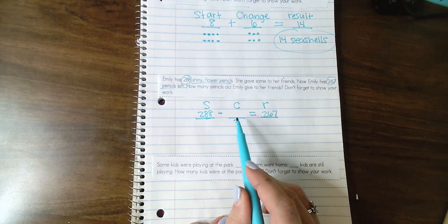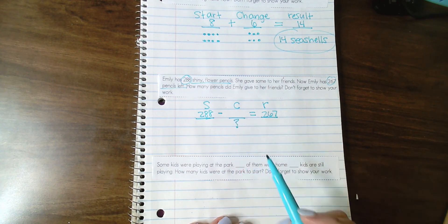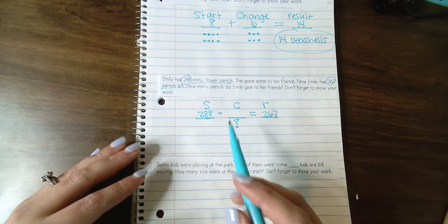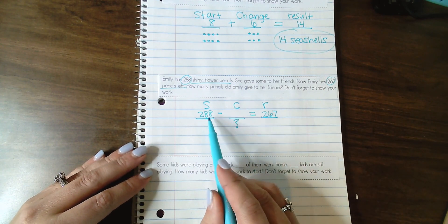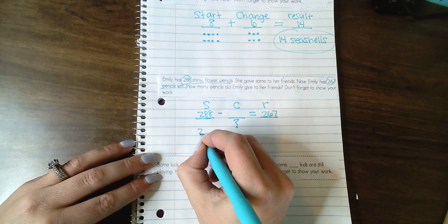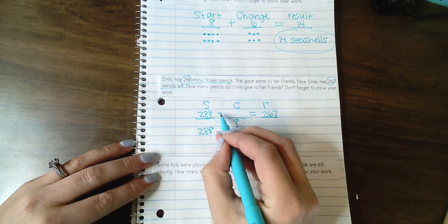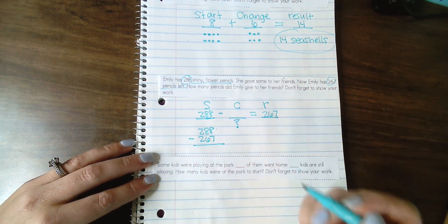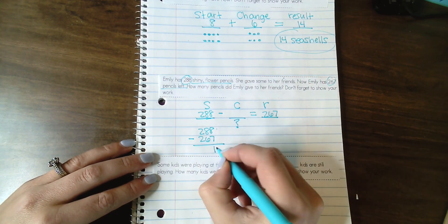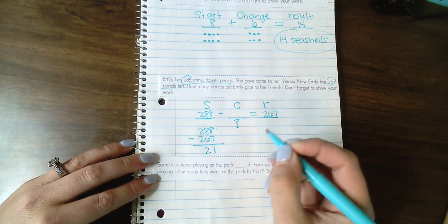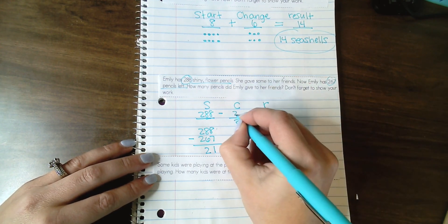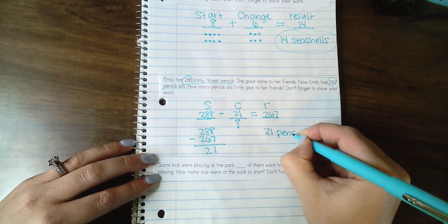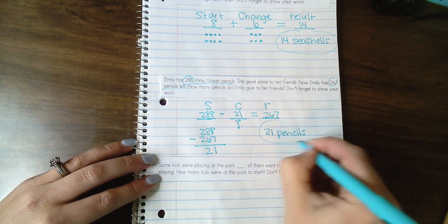Now, this also gives us a missing number. So in order to find our missing number, then we would move into the conversation of how are we going to find that missing number? To find it, we're going to do 288 minus 267. And that is going to give us our changed amount. 8 minus 7 is 1. 8 minus 6 is 2. Our change is 21. Emily gave 21 pencils to her friends.